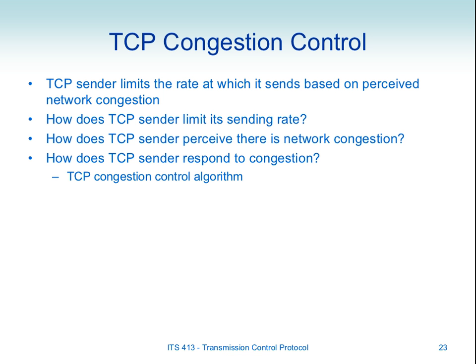Congestion in routers is bad for TCP. TCP is the main transport protocol used in the Internet. To avoid congestion, TCP has congestion control to reduce its sending rate — send less, there should be less congestion. It perceives network congestion because of packet loss. A timeout or three duplicate ACKs indicates increased congestion, so we slow down. Receiving ACKs indicates decreased congestion, so we can speed up. We have a dynamic algorithm of increasing and reducing our sending rate.